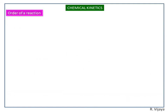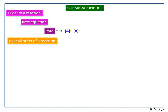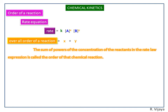Next, we see the order of reaction. Consider rate equals k times concentration of A to the power x and B to the power y. The overall order of the reaction is the sum of x and y. The sum of powers of the concentration of the reactants in the rate law expression is called the order of that chemical reaction.